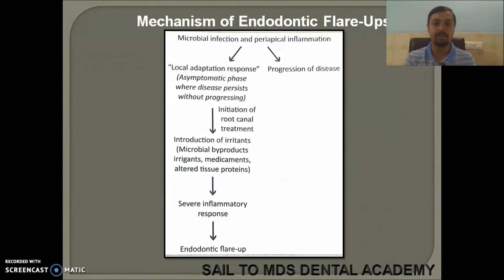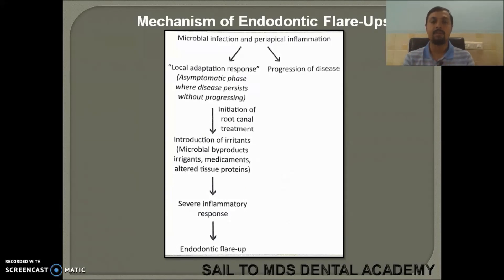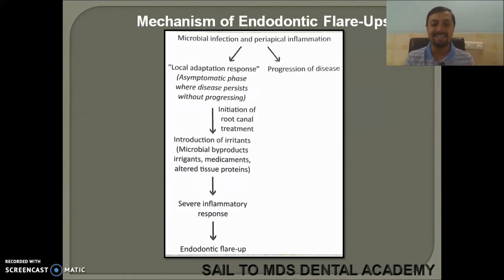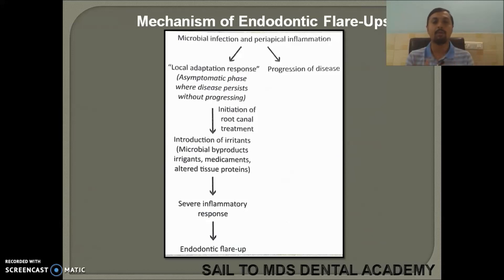In summary, endodontic flare-ups occur as follows: because of microbial infection and periapical inflammation, two things can occur — either progression of disease or local adaptation response where the patient remains in an asymptomatic phase. When you initiate root canal therapy, irritants are introduced — microbial byproducts, irrigants, medicaments, and altered tissue proteins — causing an acute inflammatory response in the periapical space, resulting in endodontic flare-up. That concludes endodontic emergencies during the treatment.